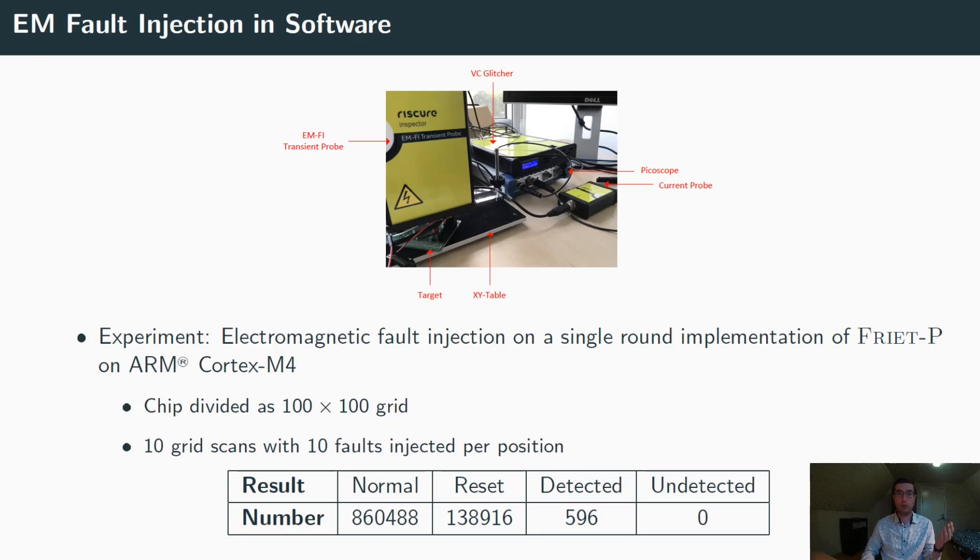In the second experiment, we injected electromagnetic faults on a single round implementation of FRIT-P on ARM Cortex-M4. We divided the chip as a 100 by 100 grid and we injected 10 faults per position for each of the 10 grid scans. This resulted in 1 million glitches and in about 86% of the cases we could not see any visible effects, so basically we only received the expected output. In nearly 14% of the cases, the glitches were too much for the chip to handle and the chip went into reset mode. All in all, there were only 596 cases in which the output was modified, but in all of those cases the parity check was able to detect the faults.